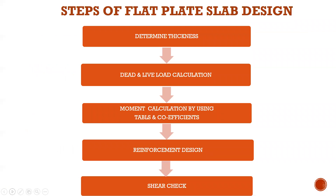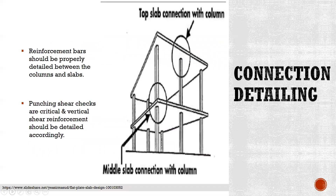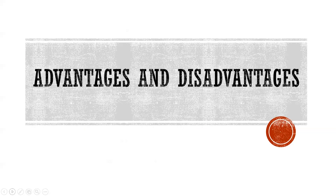Steps of flat plate slab design: first, determine thickness and gravity load calculation; second, moment calculation using direct design method or equivalent frame method; third, reinforcement design and shear check; fourth, connection detailing — reinforcement bars should be properly detailed between the columns and slabs. Punching shear checks are critical and vertical shear reinforcement should be detailed accordingly.